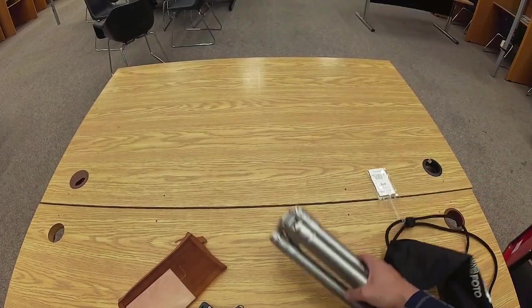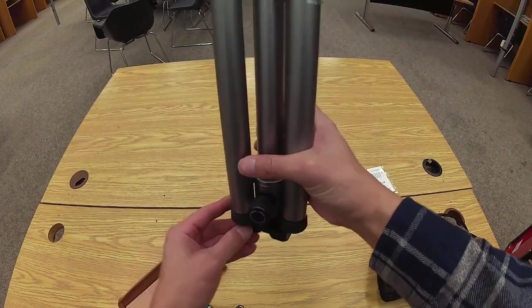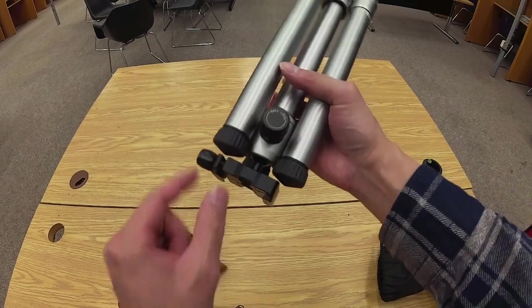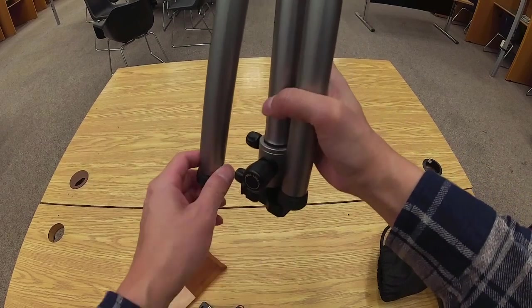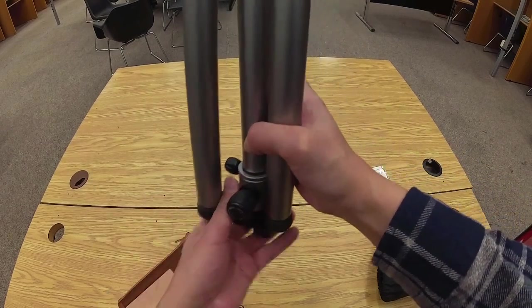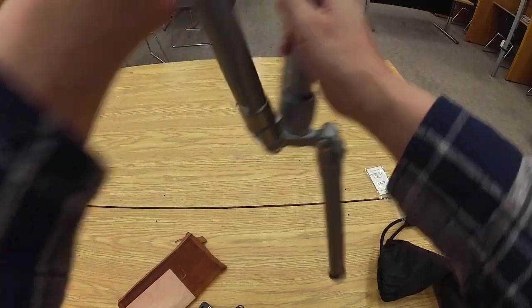So in terms of storage, the tripod is actually stored upside down. So this is the top and these are the bottoms of the legs. So basically like this, and then you unfold the legs.